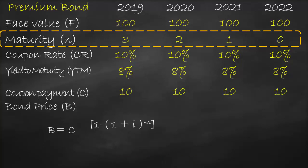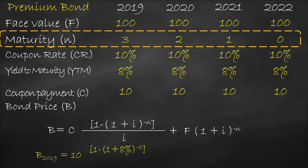The bond price formula is the present value of coupon payments plus the present value of face value. That is: coupon multiplied by [1 − (1 + YTM)^(−N)] / YTM, plus face value multiplied by (1 + YTM)^(−N). For year 2019, with coupon 10, YTM 8%, and N equal to 3, this gives a bond price of 105.15.